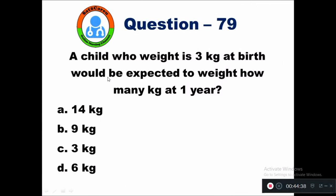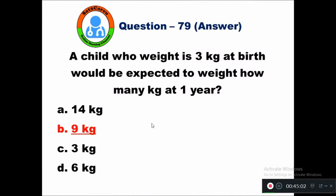Question 79: A child whose weight is 3 kg at birth would be expected to weigh how many kilograms at one year? Option A 14 kg, B 9 kg, C same as birth weight 3 kg, D 6 kg. A child's birth weight will triple in one year. So the right answer is 9 kg.